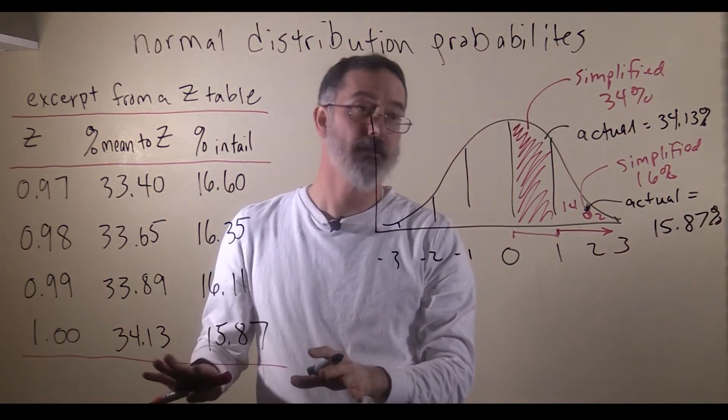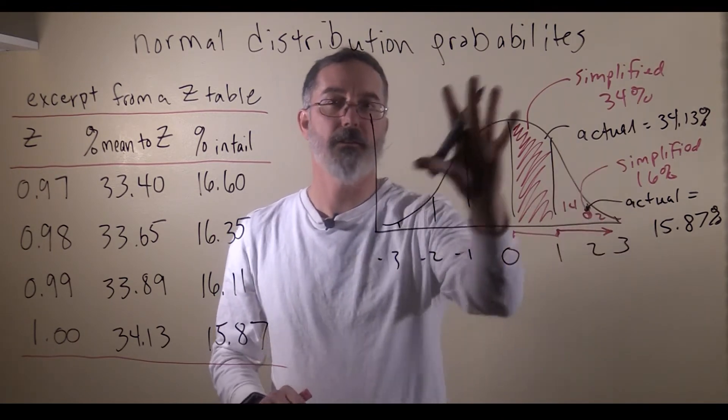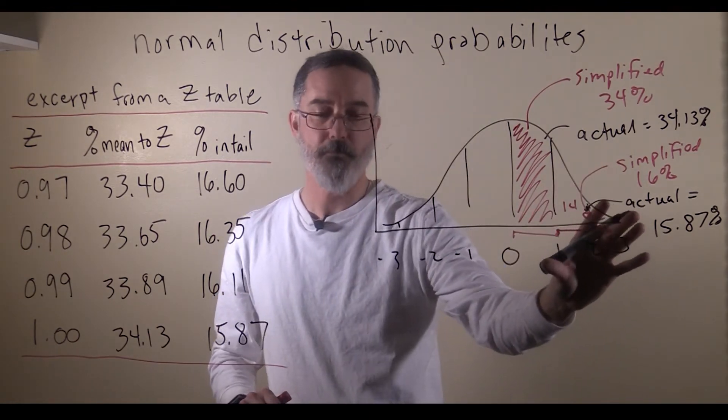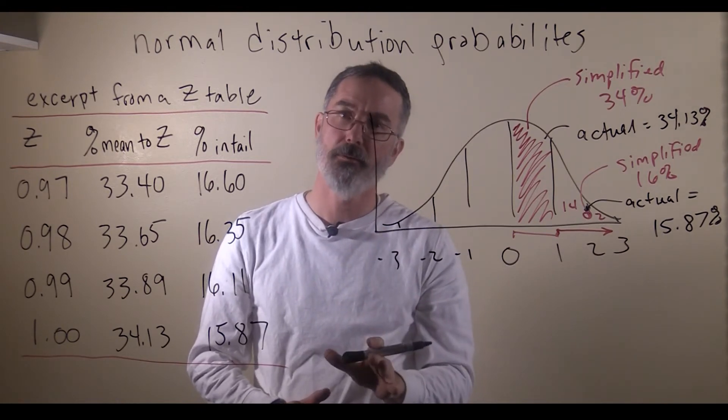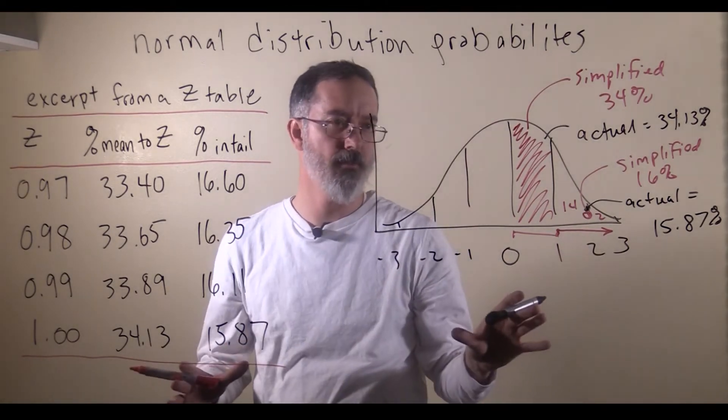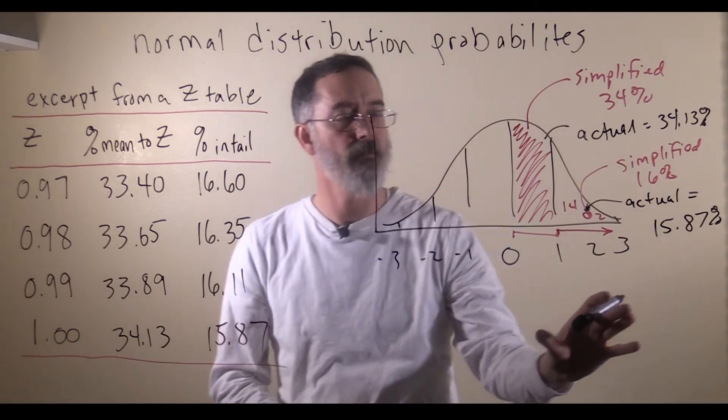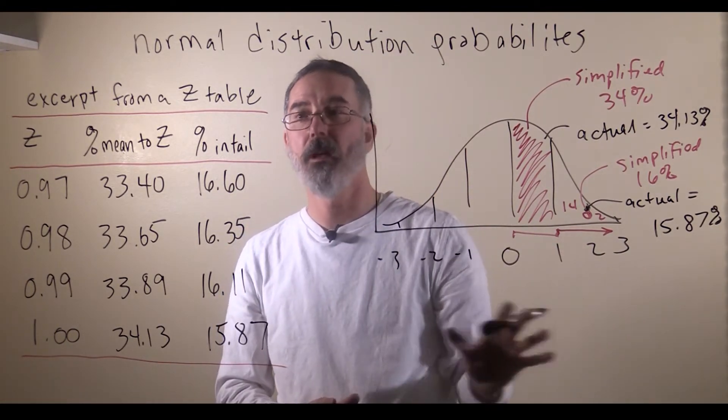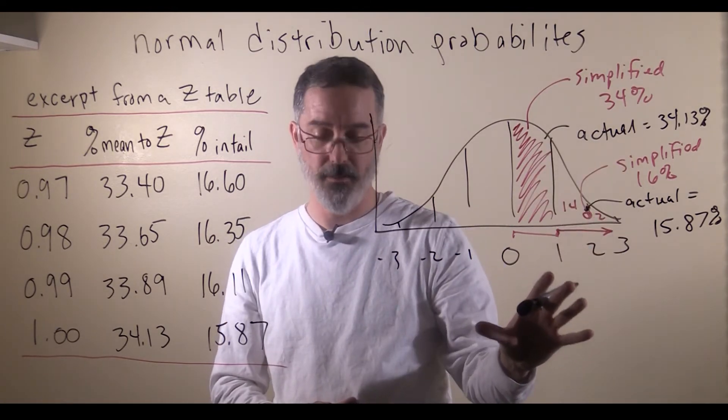So the z-table lets us do much more precise calculations of the areas under the normal distribution. The z-table can be used whenever you have a normal distribution. If you are starting off with the distribution of Whitman's Heights, because that is normally distributed, if you just transform that whole distribution into a standard normal distribution, then you can apply the z-table to calculate whatever kind of percentages you need.